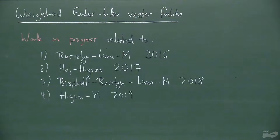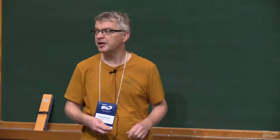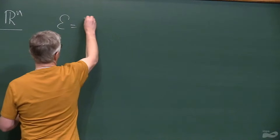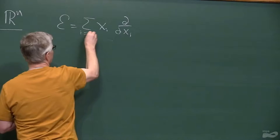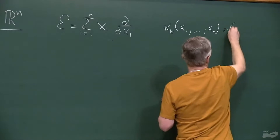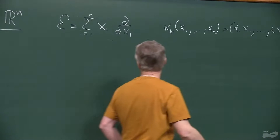To explain what it's all about, it's maybe easiest to start off with the simplest case of R^N. In R^N, what I mean by Euler vector field is just the usual Euler vector field, whose flow is just scalar multiplication. I'm going to denote kappa_T — it's just multiplying by T on each factor. So the flow of this vector field is scalar multiplication by exponential of S.